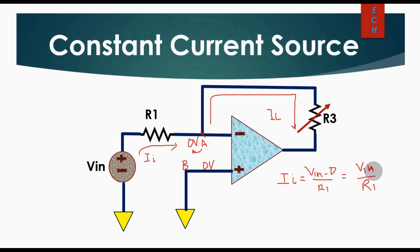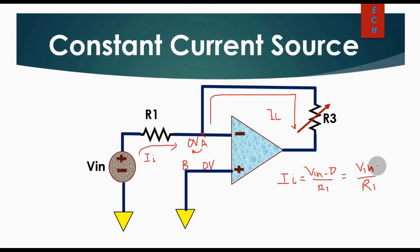By this formula, VIN divided by R1, you can see that input current II is only dependent on the value of VIN and R1. So if you fix the value of VIN and fix the value of R1, your II will be fixed.